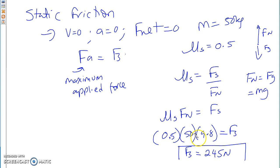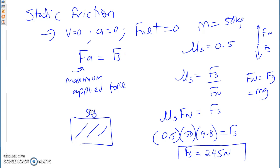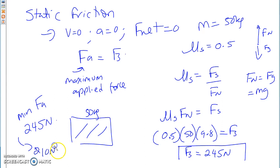This object, which is 50 kg, will need a minimum applied force of 245 newtons for it to just start to move. If I only put 210 newtons, it will not move. 150 newtons — it will not move. 244 will not move. You need a minimum of 245 newtons for your object to just start to move.